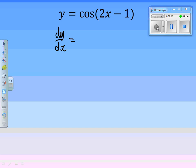Cos of something goes to minus sine of something, but we need to differentiate it by, or multiply it by the differential of 2x minus 1. So we end up with minus 2, which is the differential of 2x minus 1, sine 2x minus 1.